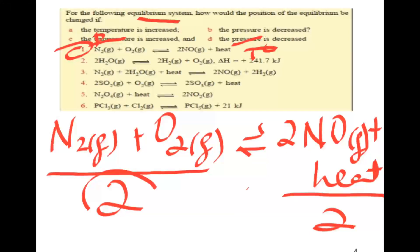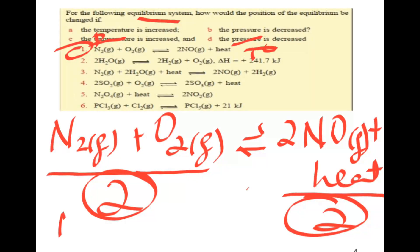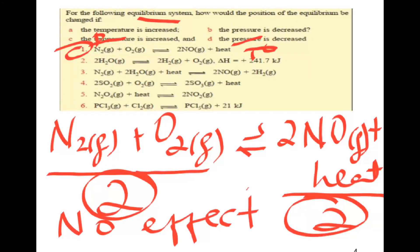When there is an equal number of moles on both sides of the equation, there is no change in the position of the equilibrium. Whether you increase or decrease the pressure, it has no effect on the position of the equilibrium when moles are equal on both sides.